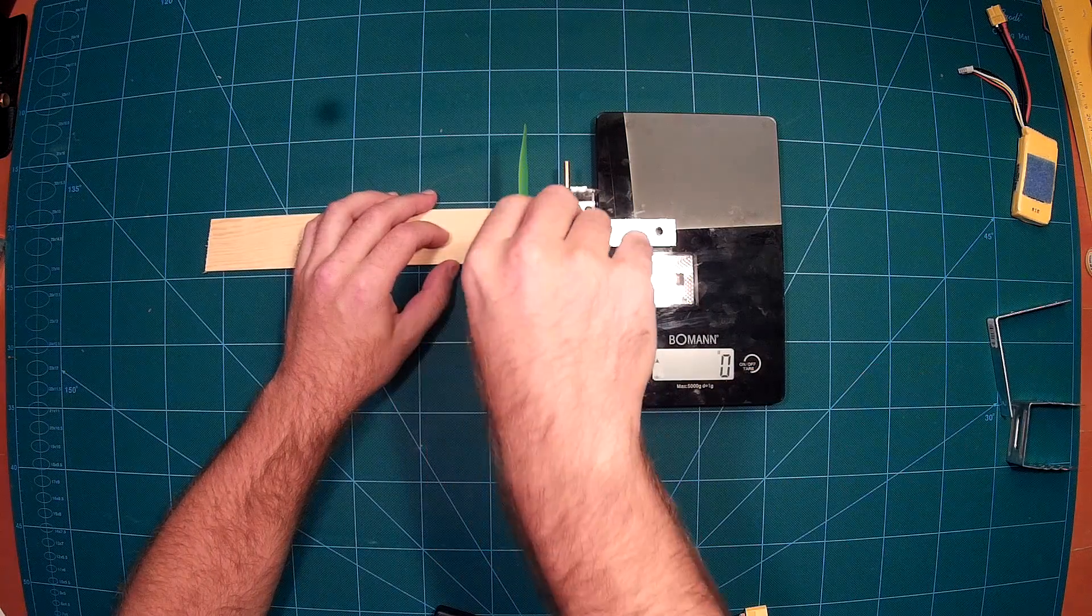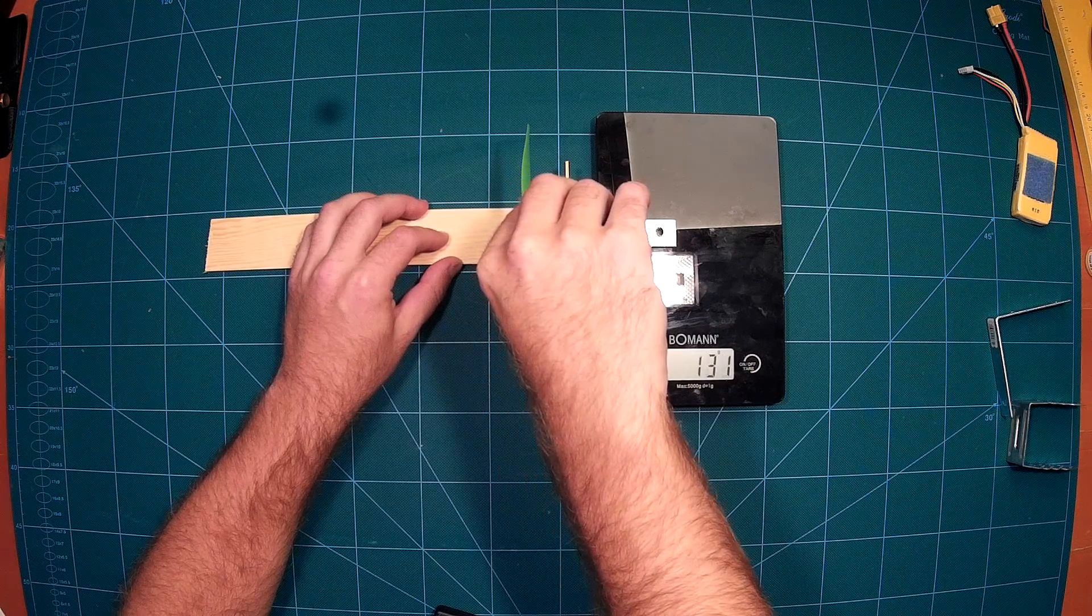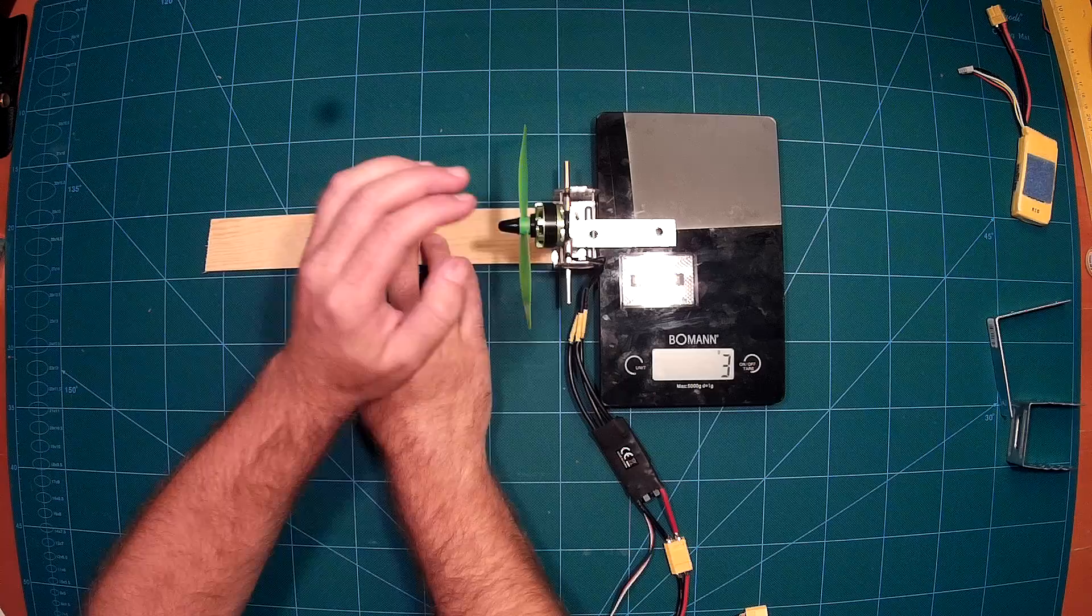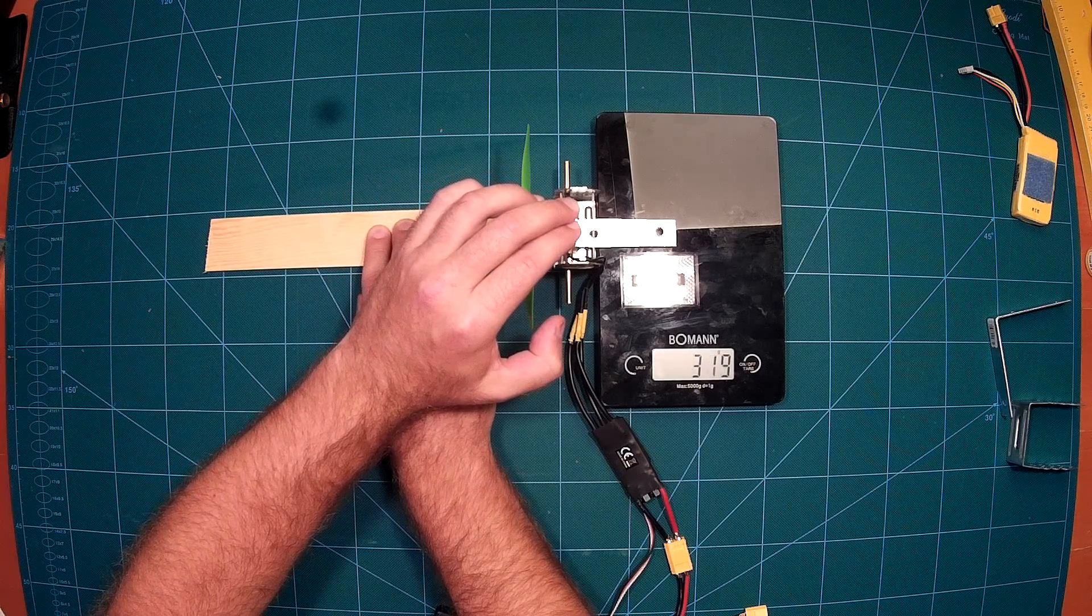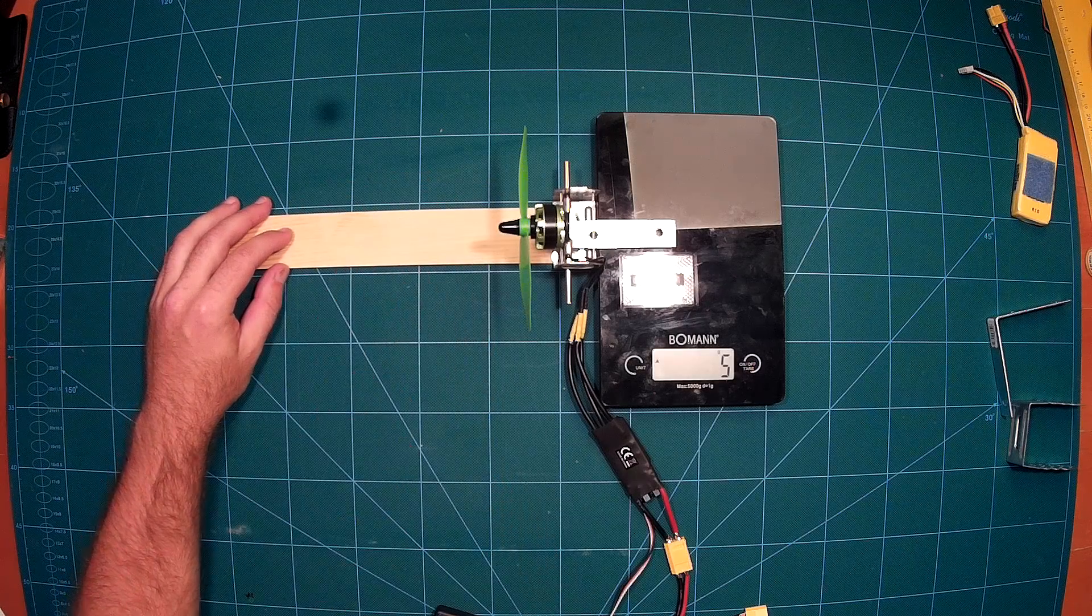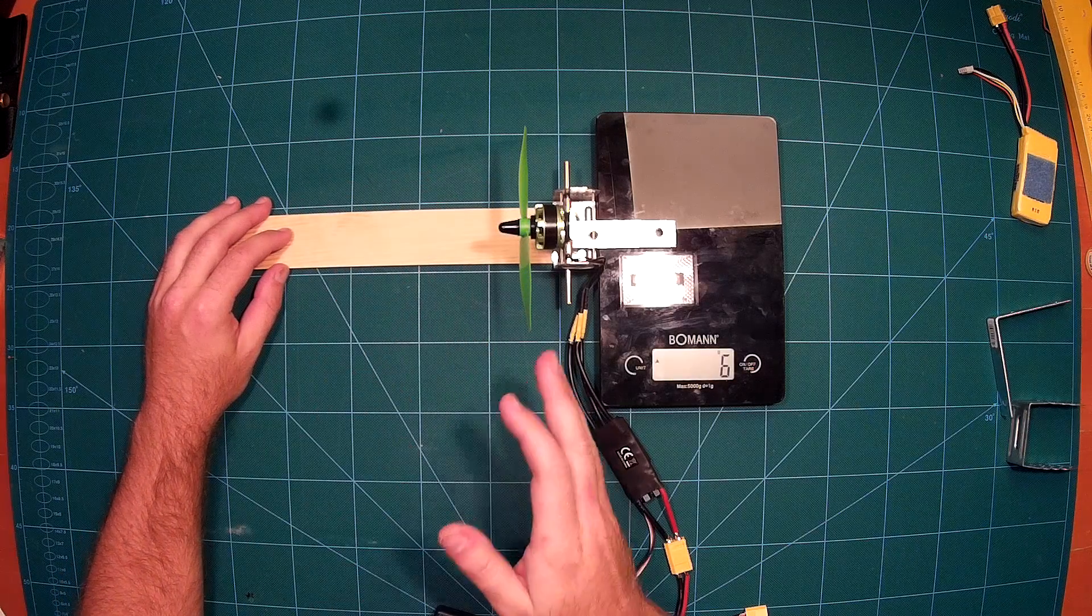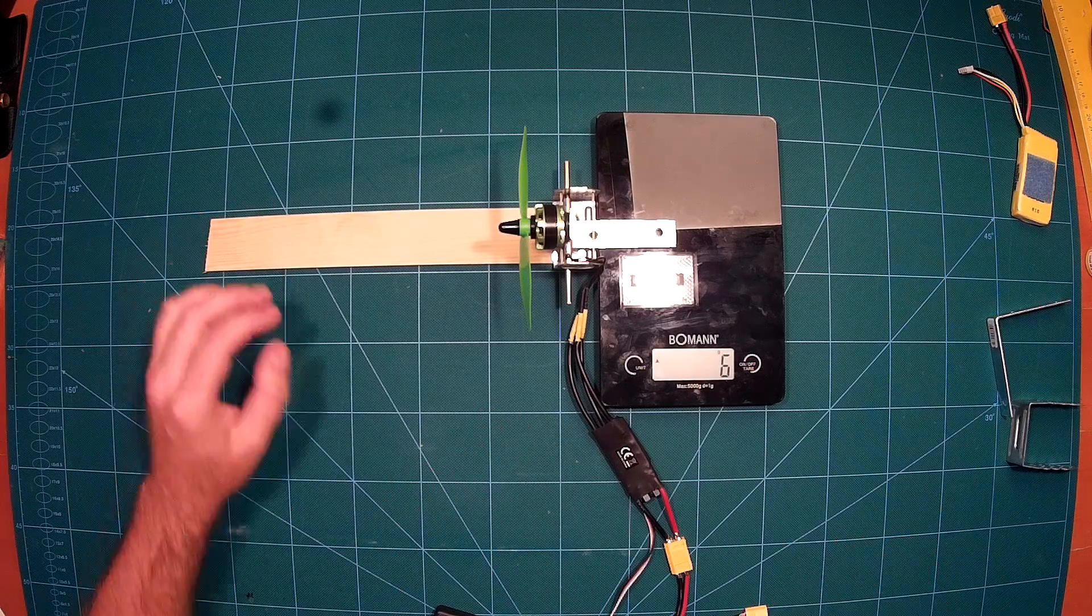So I have already set this up as a pusher, so once that runs the amount—you can see it better that way—the amount will show on your scales. And that is the thrust which you have from this motor propeller LiPo combination. So let's try it out.